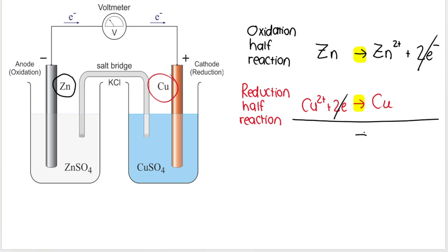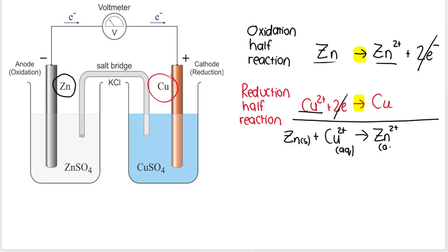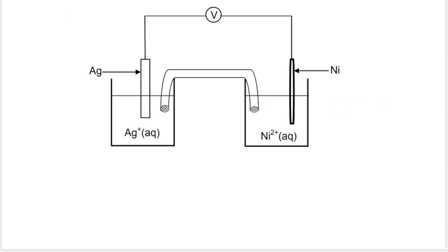Then you write your arrow again and rewrite everything on the left-hand side: solid zinc and Cu²⁺ ions. Then on the right-hand side of the arrow: Zn²⁺ ions plus solid copper. This is what we refer to as the net or overall cell reaction.